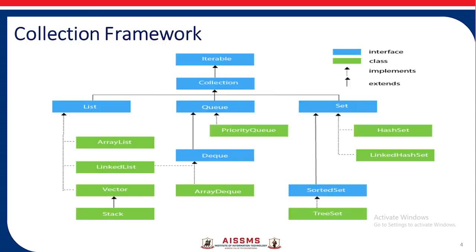This is the collection framework hierarchy where Iterable, Collection, Queue, List, Set, Deque, and SortedSet are all interfaces. ArrayList, LinkedList, Vector, Stack, ArrayDeque, PriorityQueue, HashSet, and LinkedHashSet are the classes which implement those interfaces.